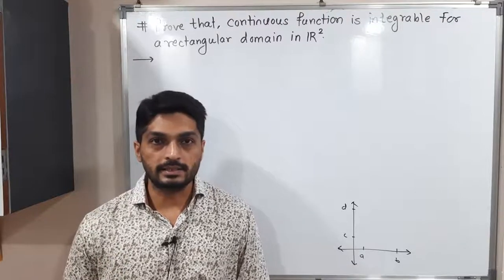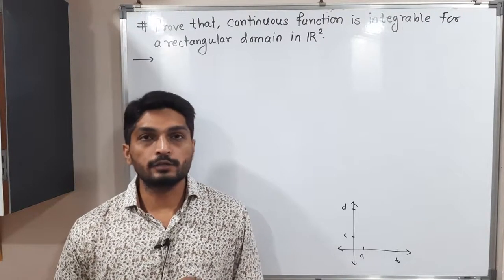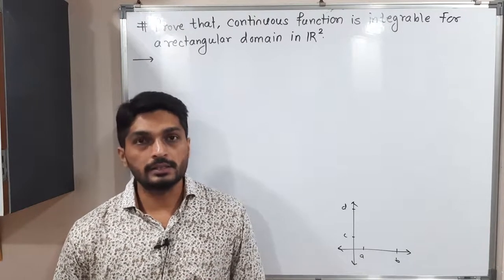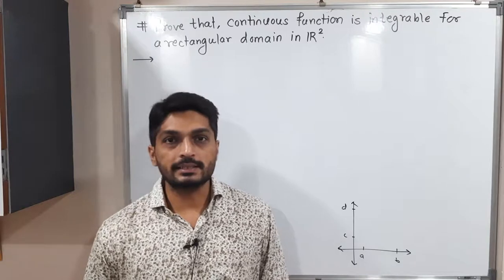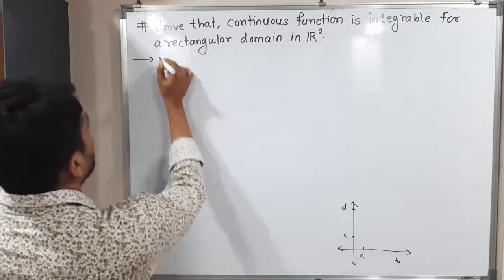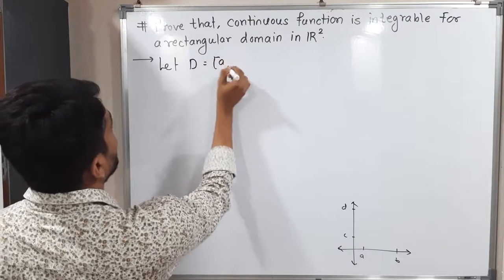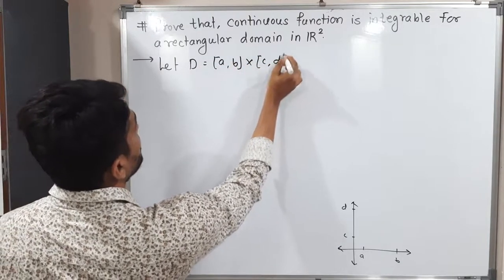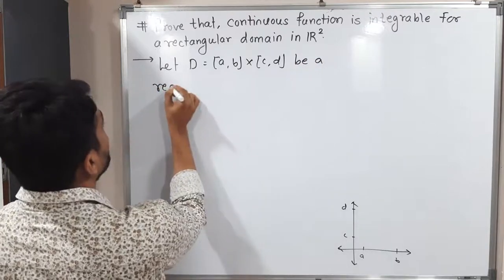Let us discuss this result. In this result we have to prove that a continuous function defined on a rectangle in R2 is integrable. Let D equal to [a,b] cross [c,d] be a rectangle in R2.